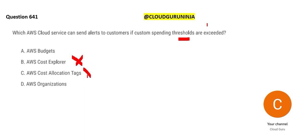Cost Explorer also has tags, so it will show you breakdowns like utilities or groceries by tag. But the question is about sending alerts when your budget is about to be exceeded. At home, who tells you that you are going to exceed your budget? You need some utility software to alert you. In the AWS world, AWS Budgets will tell you that you are overspending — so AWS Budgets is the correct answer.